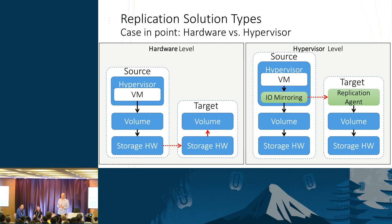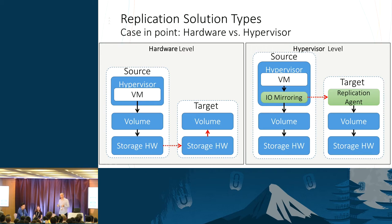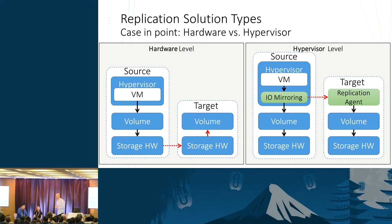We would like to present software-based replication that we developed in Huawei, developed in the hypervisor. We introduce a new agent into the hypervisor. This agent is on the data path. It basically takes the data, writes it to the disk, and at the same time duplicates it and sends it to the other side — to what you see in the slide as the target replication agent.